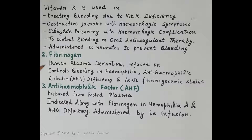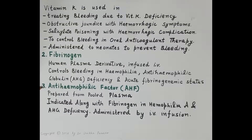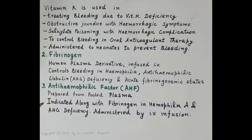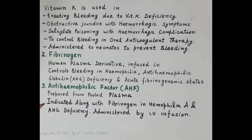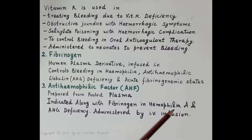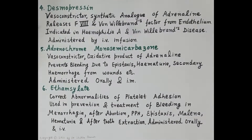A second coagulant is fibrinogen, a human plasma derivative administered by IV infusion. It controls bleeding in hemophilia, anti-hemophilic globulin deficiency, and acute afibrinogenemic states. The third coagulant is the anti-hemophilic factor, prepared from pooled plasma. It is clotting factor 8, indicated along with fibrinogen in hemophilia A and anti-hemophilic globulin deficiency, and administered by IV infusion. In hemophilia A, there is a congenital deficiency of clotting factor 8.